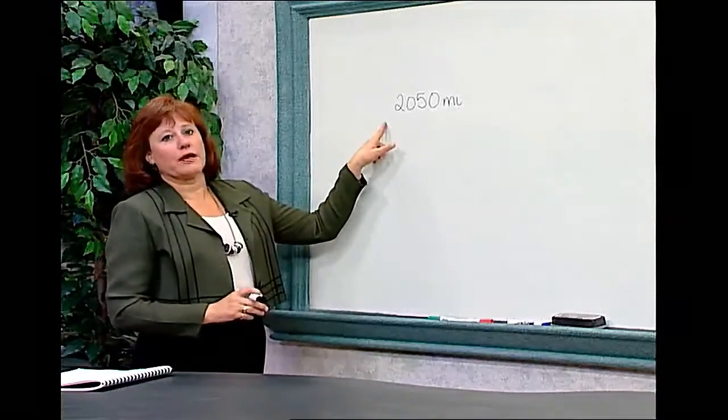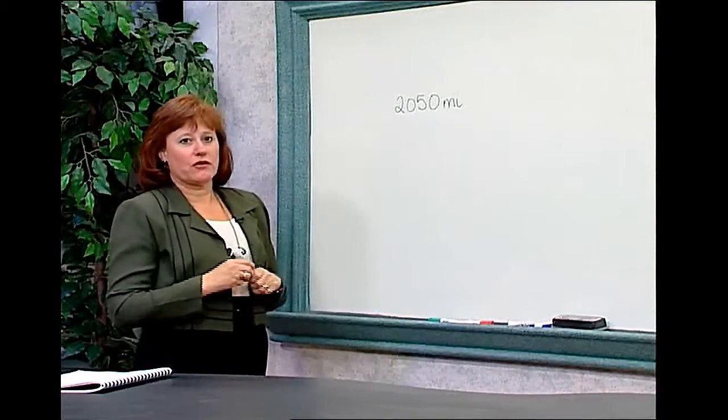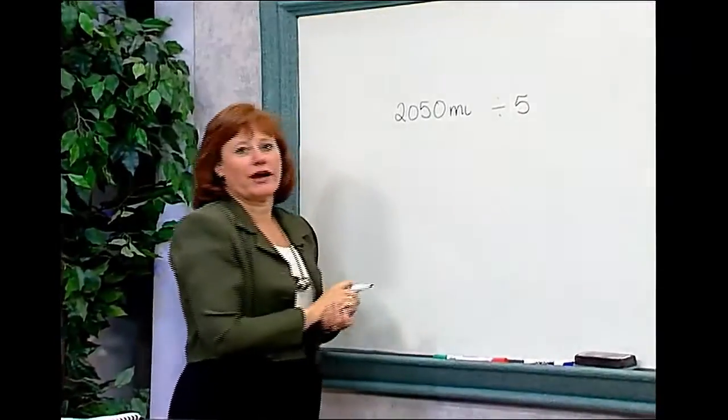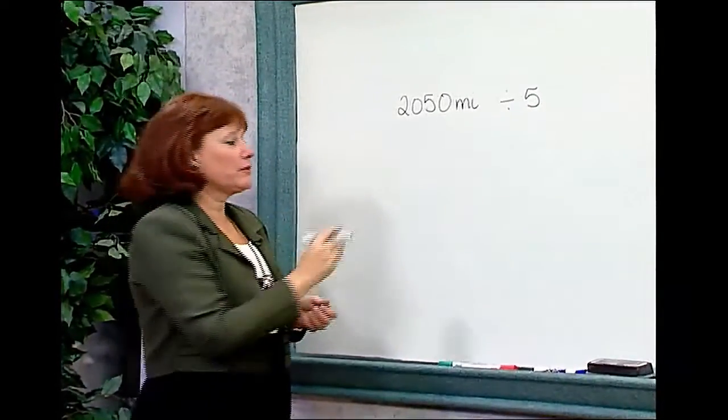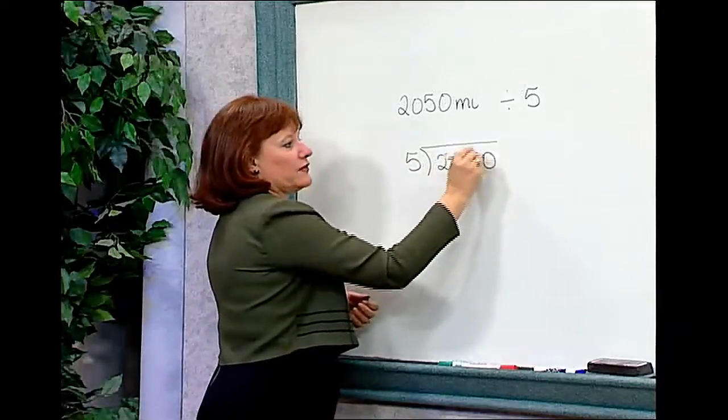We know John and Linda traveled 2,050 miles and we want to know their average each day. Since they drove five days, we'll take 2,050 miles and divide it by five. We're going to rewrite this in our alternate form, 5 into 2,050.